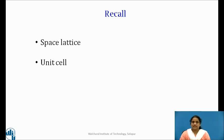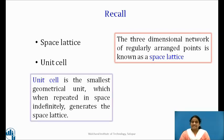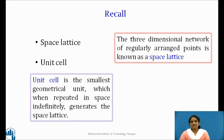Space lattice is the three-dimensional network of regularly arranged points, and unit cell is the smallest block which, when repeated in space indefinitely, generates the space lattice. On the basis of lattice parameters — that is axial lengths A, B and C, and the interaxial angles alpha, beta and gamma — the crystals are classified. Let us now see this classification in detail.